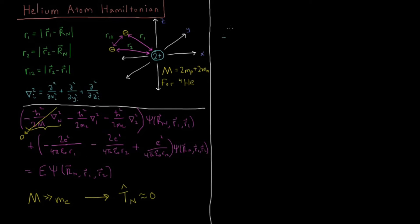So if we make that simplification, then our Hamiltonian reduces to minus h-bar squared over 2mE times the Laplacian of each electron. So these are kinetic energy of electron 1 and 2, same mass, so we can factor that out, acting on ψ, which is a function of the position of each electron.